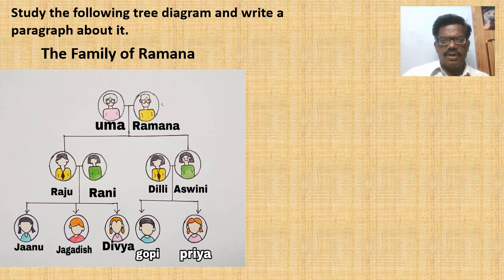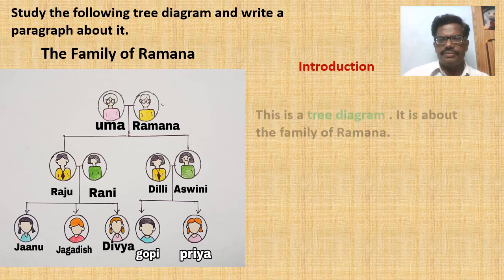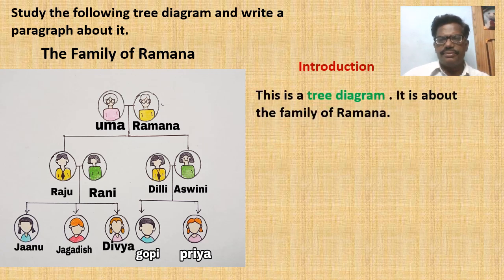Here is an example of a tree diagram with regard to family relations. Study the following tree diagram and write a paragraph about it. The heading of the tree diagram is 'The Family of Ramana.' The students may be asked to observe the picture carefully and write a paragraph about it. First, they may give an introduction: 'This is a tree diagram,' and as the second sentence they may write about the heading of the tree diagram — that it is about the family of Ramana.